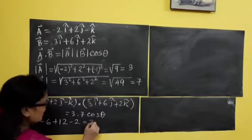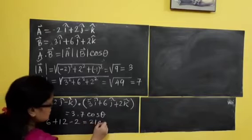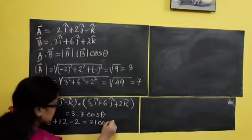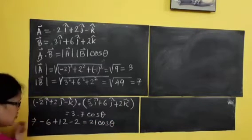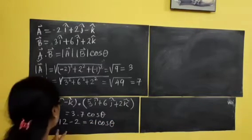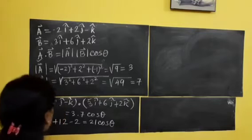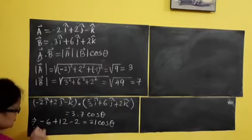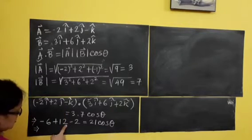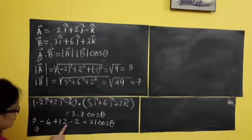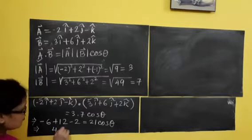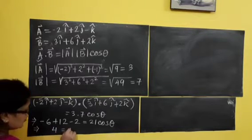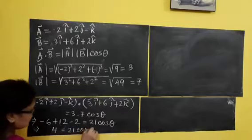3 is equal to 21 cos theta. So, from here what I will get? Minus 6 — that is 4. It is 10, 10 minus 3, 10 minus 6 is 4. So, 4 equals 21 cos theta.